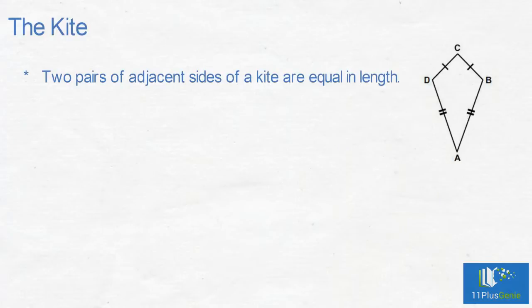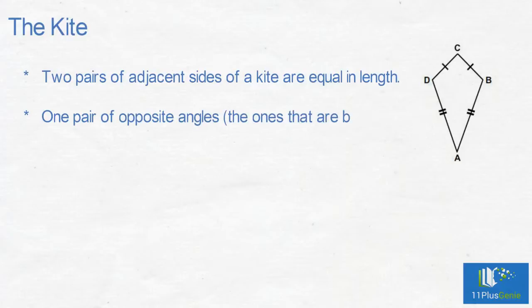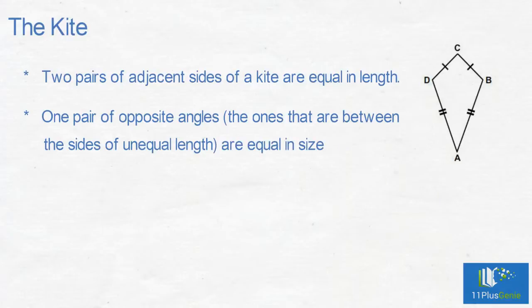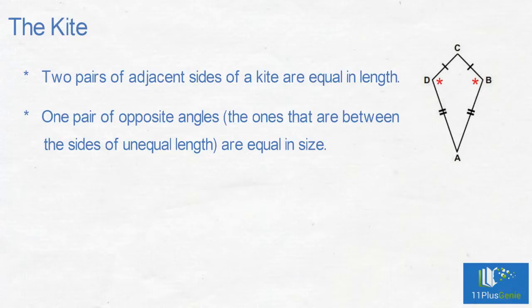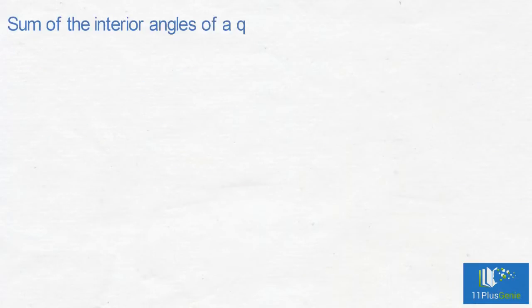Kite: two pairs of adjacent sides of a kite are equal in length. One pair of opposite angles — the ones that are between the sides of unequal length — are equal in size: angle D equals angle B.